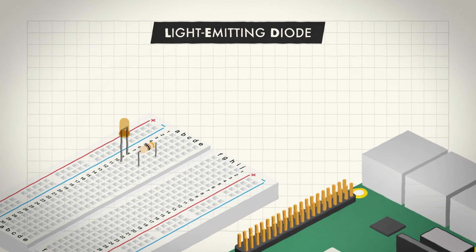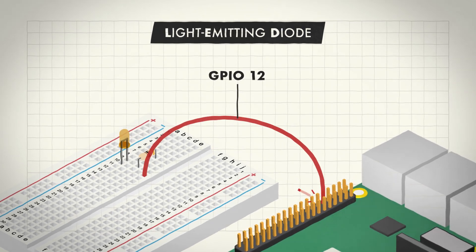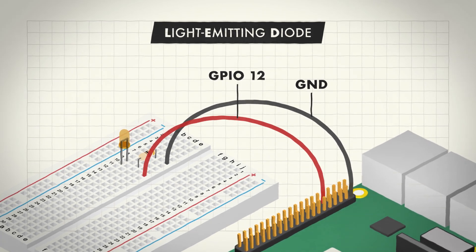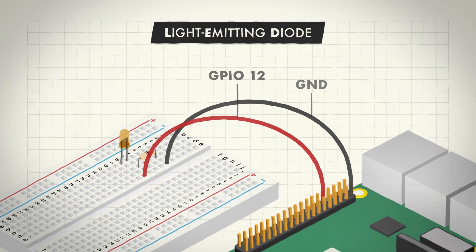We show the bulb here connected to pin 12, but you can use any numbered pin on your Raspberry Pi. Whichever pin you choose, remember to use the correct pin number in your script.